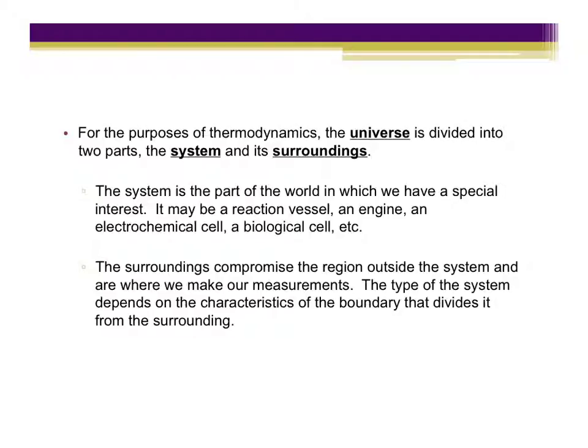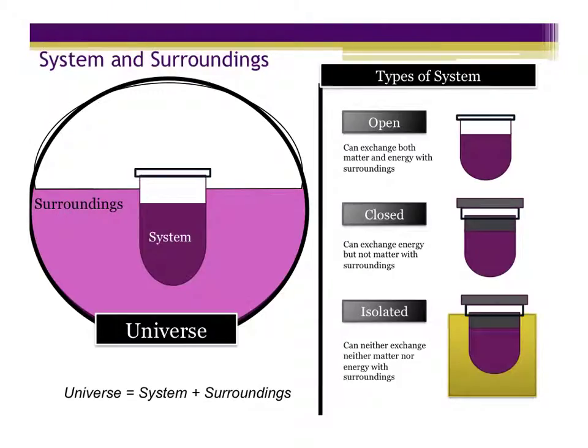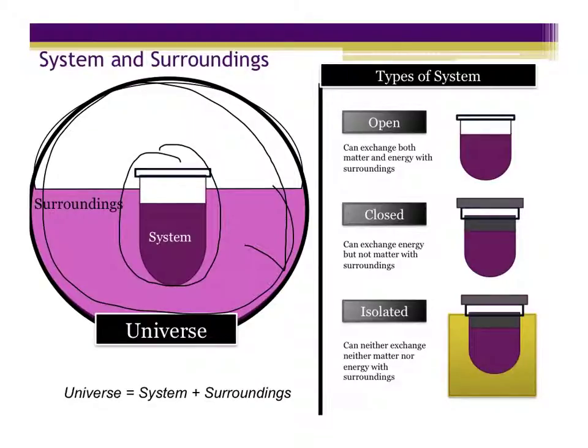When we actually undertake the study of thermodynamics, we think about what the object under study is. When we're talking about quantifying what's taking place in a thermodynamic system, we have to know that the universe is divided into two parts: the system and its surroundings. The system is the part of the world that we're actually studying. The surroundings is basically everything else. The universe is composed of the system plus the surroundings.